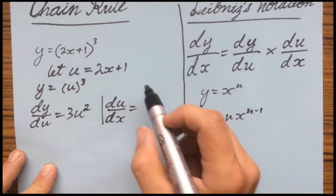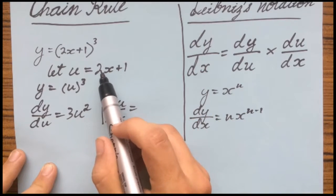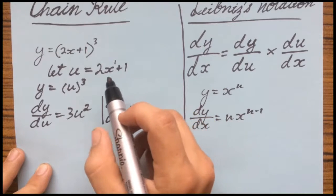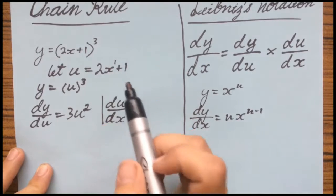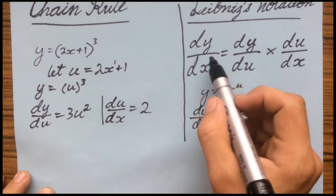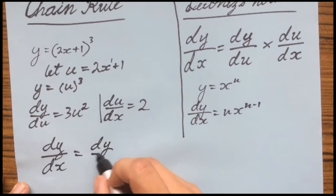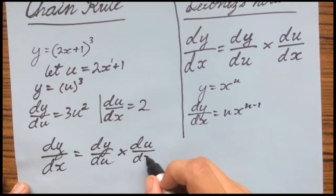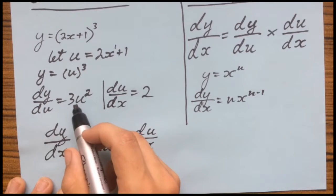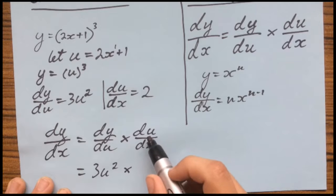So we derive this. The 1 cancels out because when you derive a single real number it goes to 0. For 2x, x technically has power 1. As shown in a previous power rule video: 1 take 1 is 0, so you're left with 2 times 1 — x to the power of 0 is 1 — so du/dx equals 2. Now, following the formula: dy over dx equals dy over du multiplied by du over dx. That gives us 3u squared multiplied by 2.